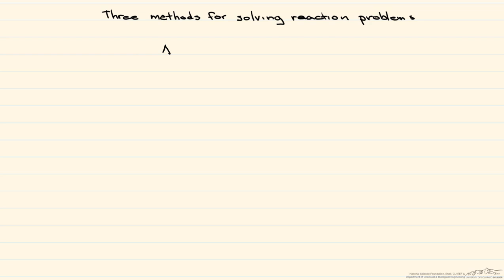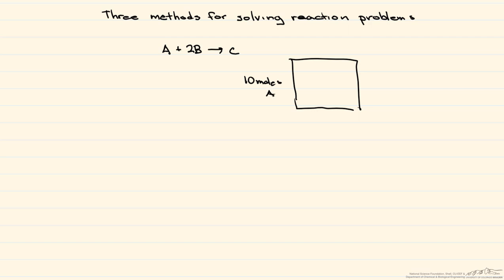Let's consider a reaction such that A plus two B goes to C. Here's our reactor, and we have 10 moles of A and 30 moles of B that enter the reactor. We also know that the fractional conversion of A is equal to 0.9. What we want to do is find the number of moles of each component in the product stream.